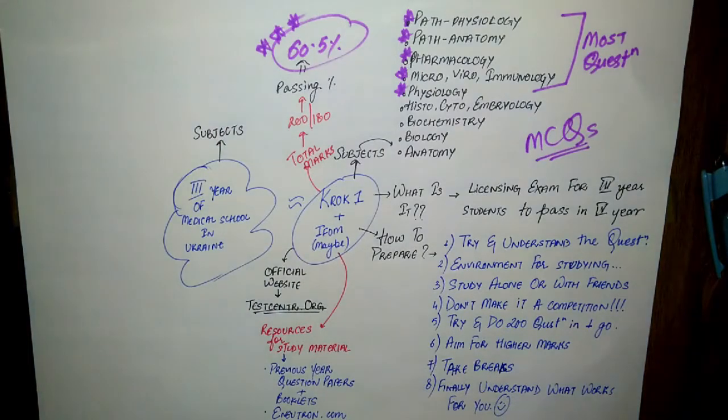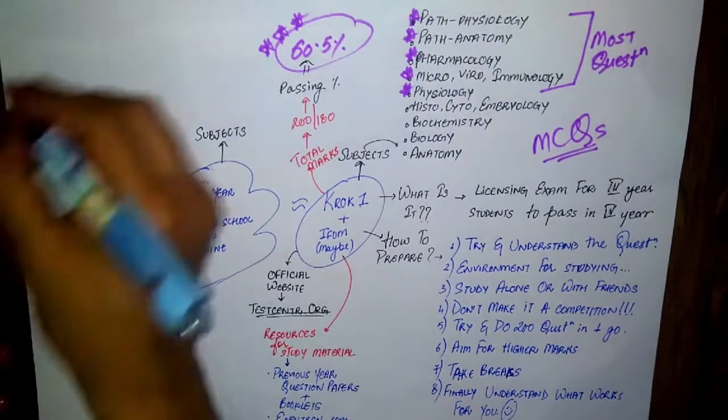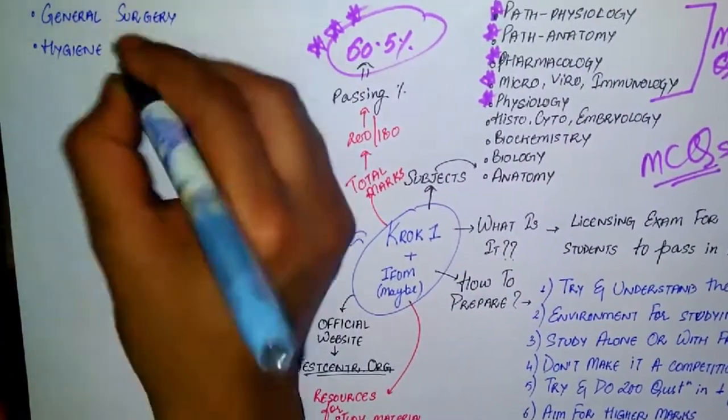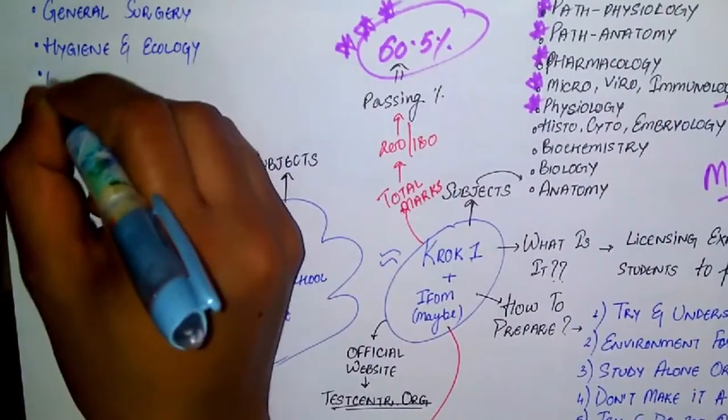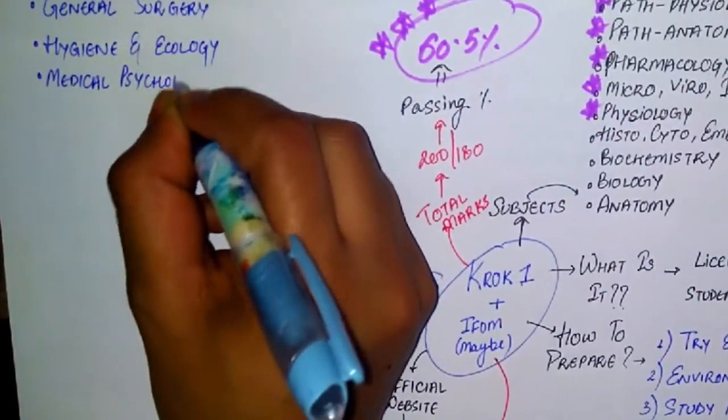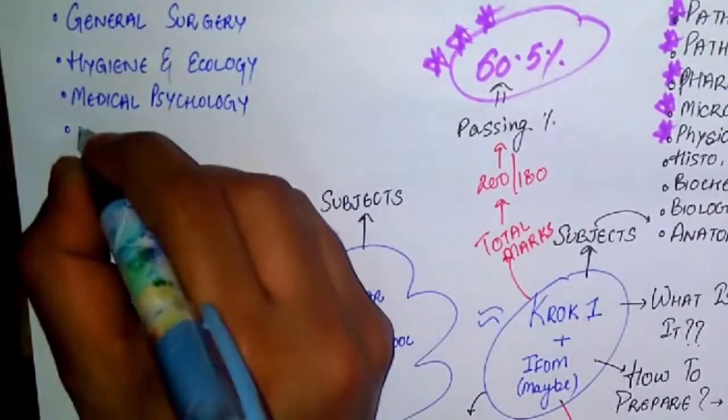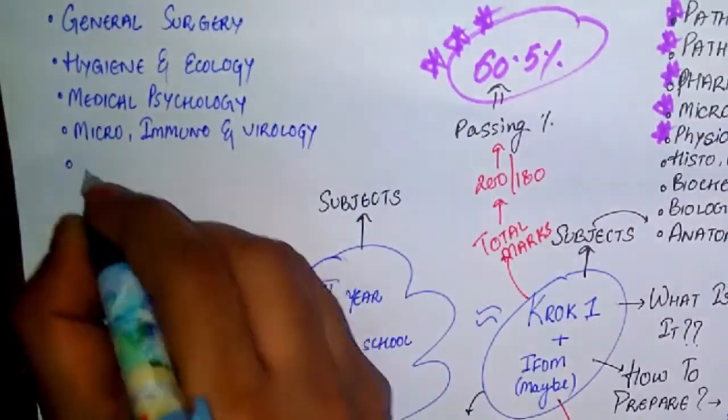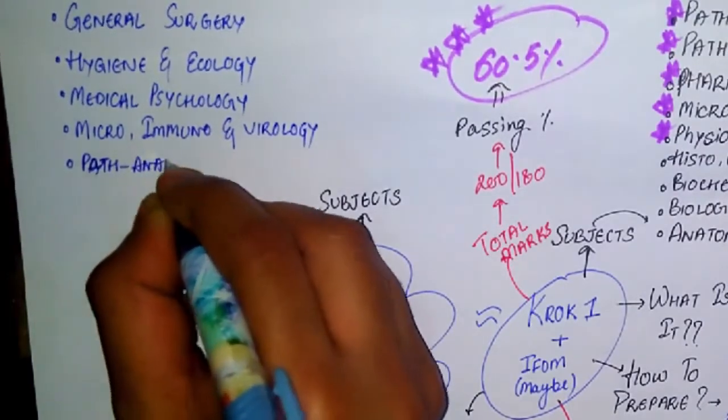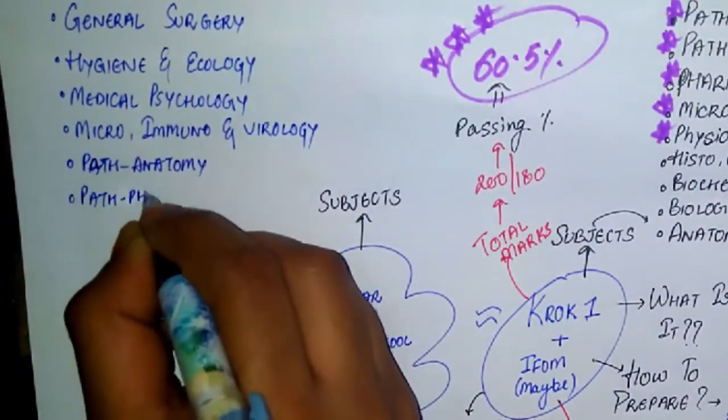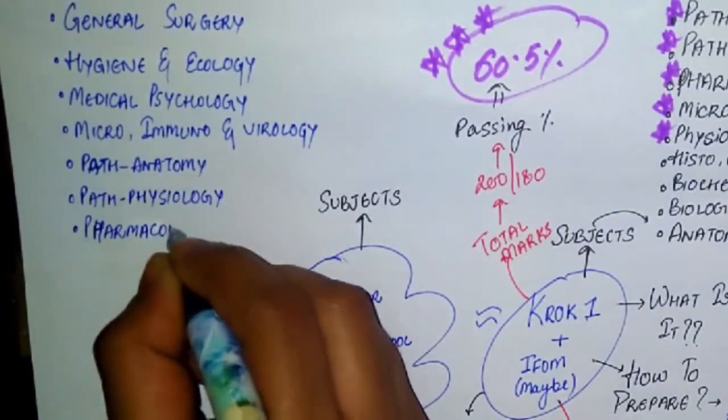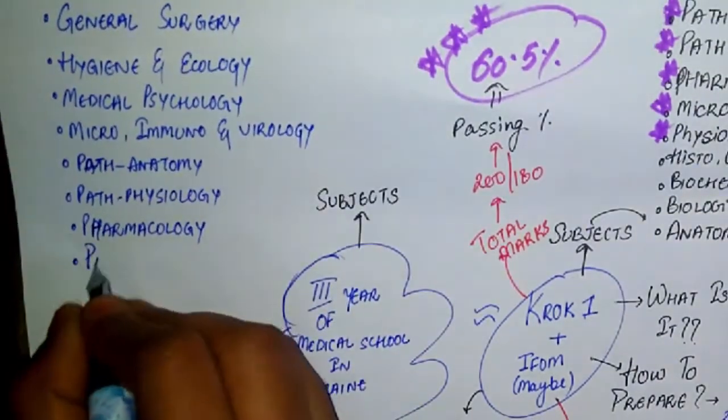Most of the third year is all about CROC. The subjects you study in third year are not just important for CROC but also for the FMG which you give when you come to India. Let's talk about the subjects I had in third year, which include general surgery, hygiene and psychology, medical psychology, microbiology, immunology and biology all together, path anatomy or path morphology, and also path physiology. Path anatomy and path physiology are taught in India as pathology, which is a very important subject for FMG. There's pharmacology.